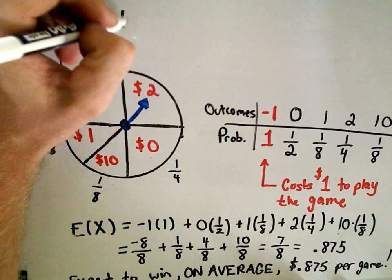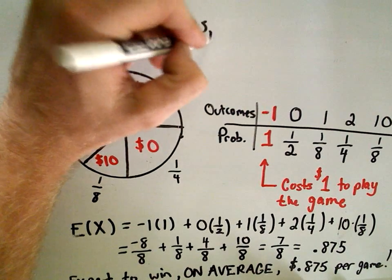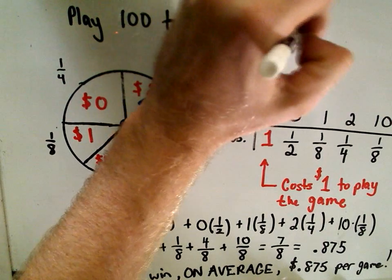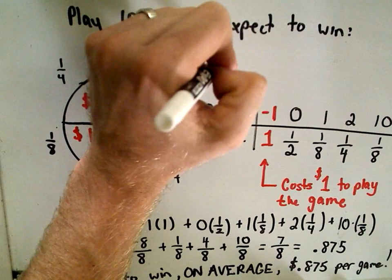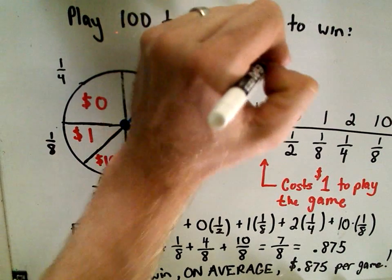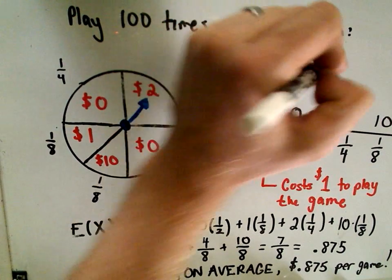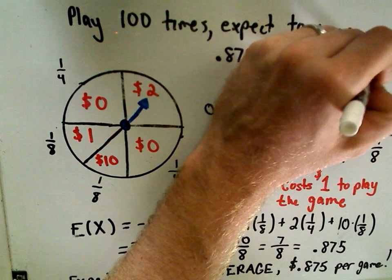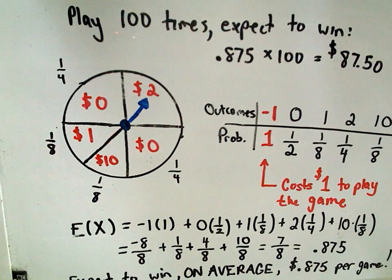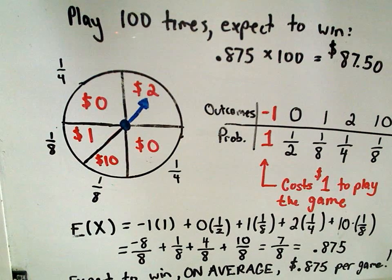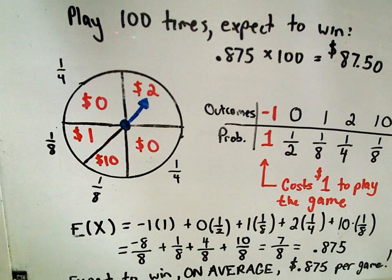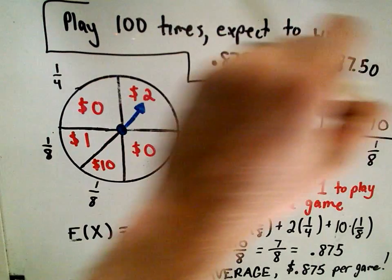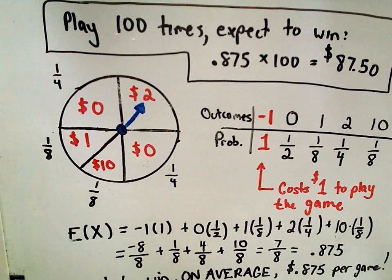Suppose you played 100 times. So if you play 100 times, you could expect to win 0.875 times 100. So that would simply move the decimal place twice, or give you 87.50. So if you can expect to win 0.875 each time you play, you could expect to win roughly $87.50 if your friend was crazy enough to play with you for that long.